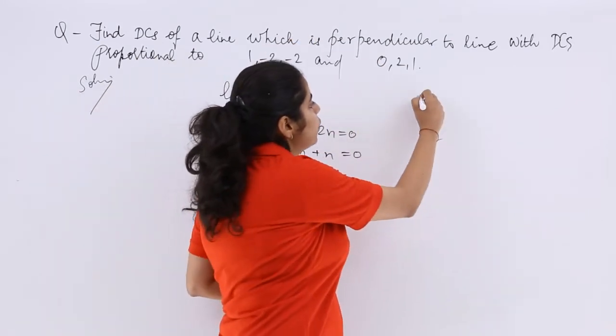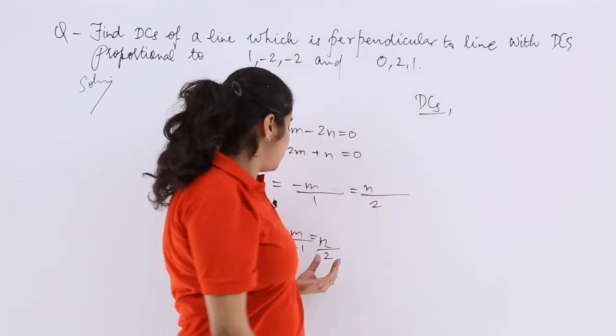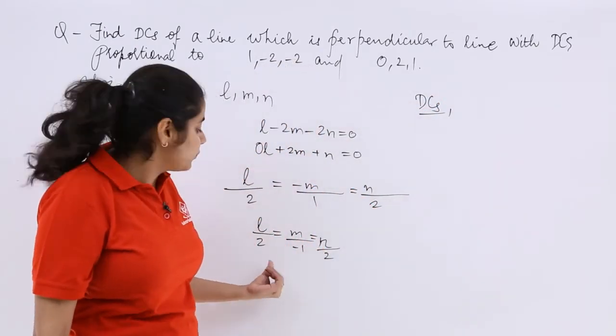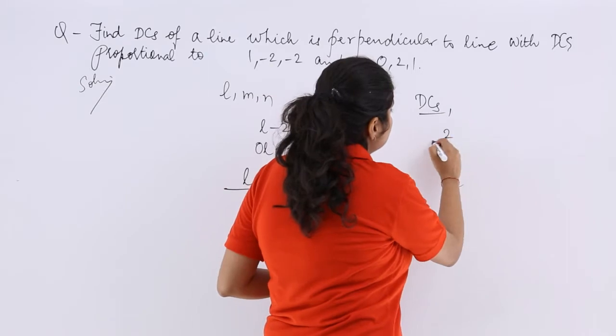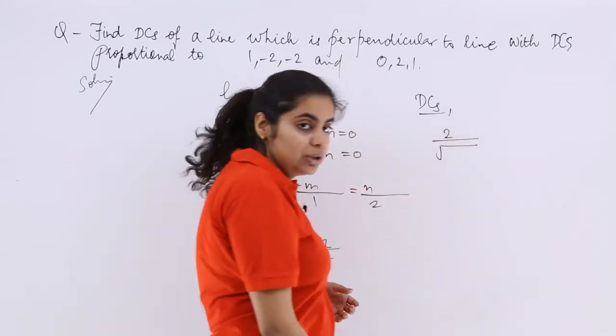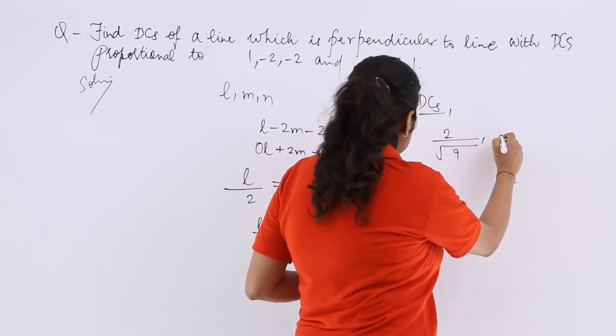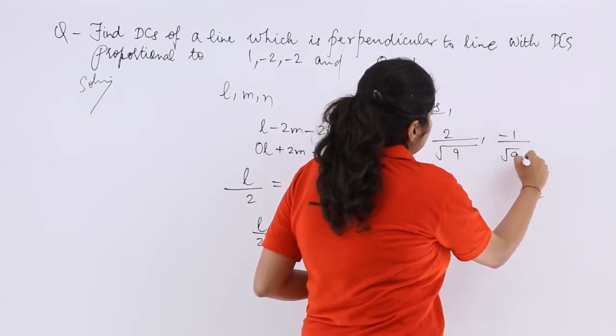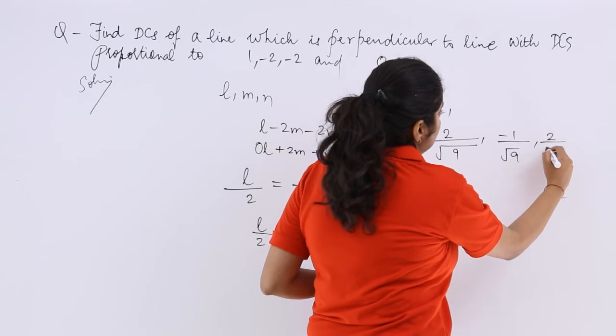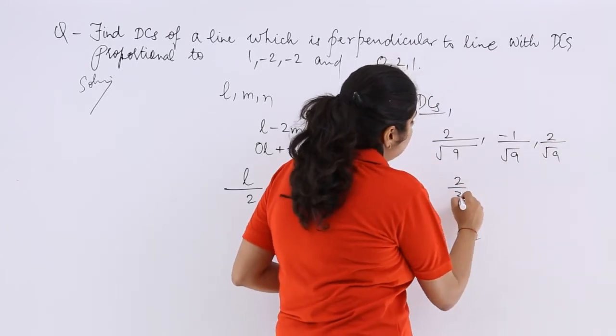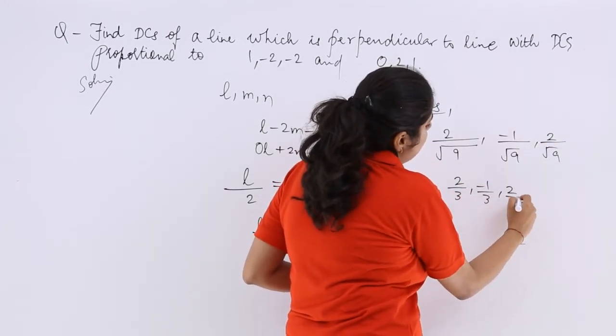Now talking about the direction cosines, you know that if some methodology says like this, this actually means that the required direction cosines would be 2 upon under root 4 plus 1 plus 4 which is 9. Similarly, minus 1 upon root 9, similarly 2 upon under root 9. Now which is 2 by 3, minus 1 by 3, 2 by 3.